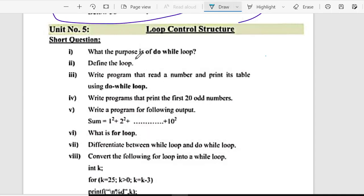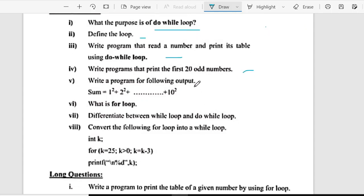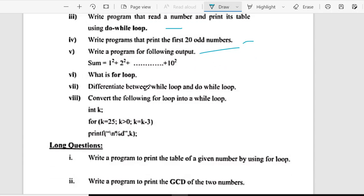Short question, what is the purpose of do-while loop? Number two, define the loop. Number three, write a program that reads a number and print it using do-while loop. Number four is, write a program that prints 20 odd numbers. Number five is, write a program with the following output, sum equals to one square plus two square plus ten square. Sixth is, what is for loop? Seventh is, differentiate between while and do-while loop. And eighth is, convert the following loop into a while loop.